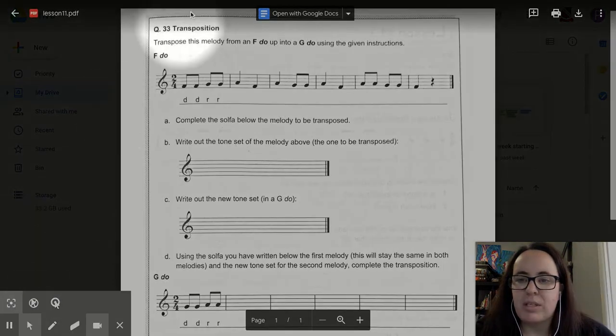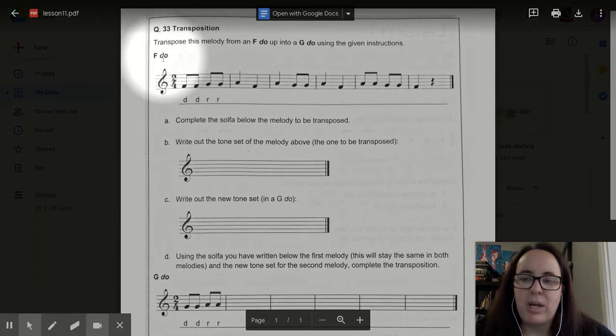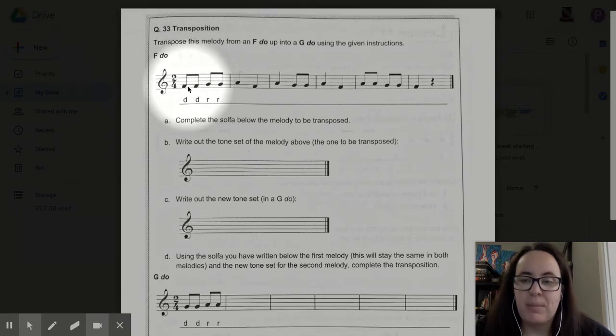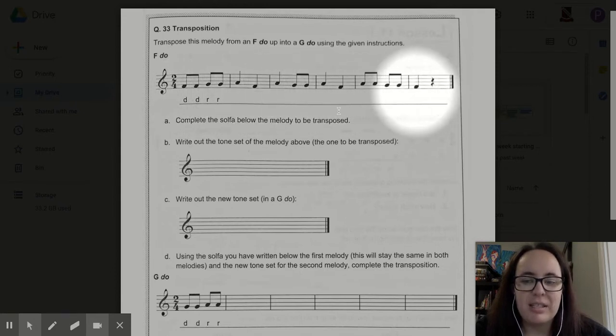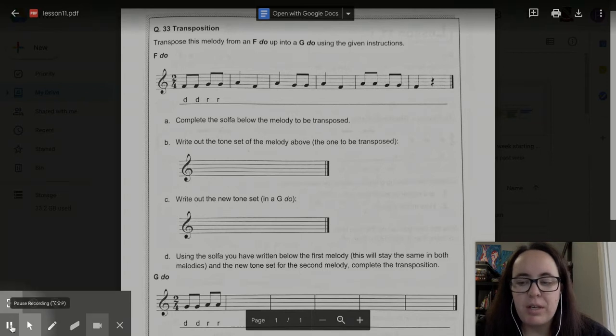If you look up here in question 33, you can see that we are in F DO, which means that this note in space number one right here is DO, and stepping up from space one to line two, we have a G which we're calling RE. And then stepping up from line two to space three, we have our ME sound. So DO is in space one, G is on line two, RE is in space two. The first thing you need to do is write in your solfege underneath this melody. Pause the video here and do that now.